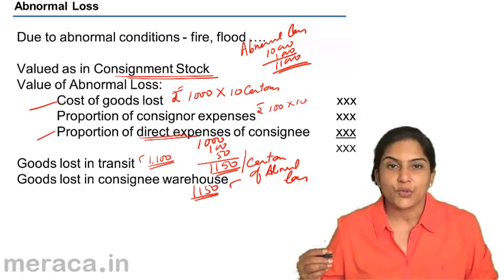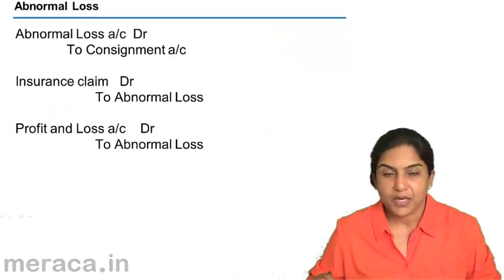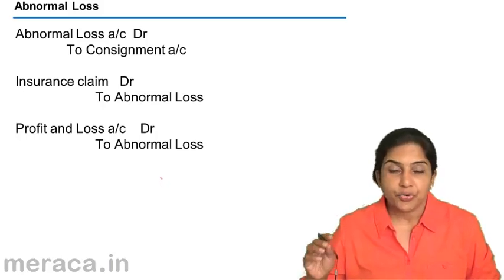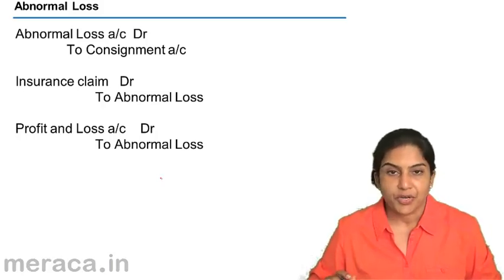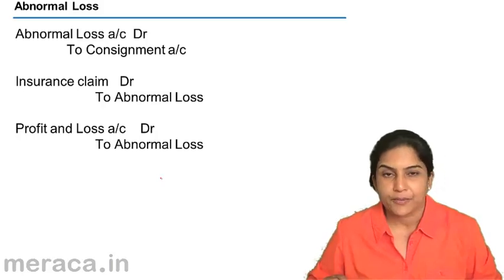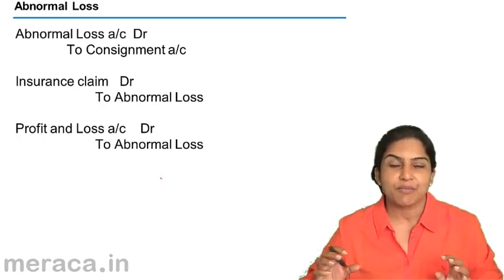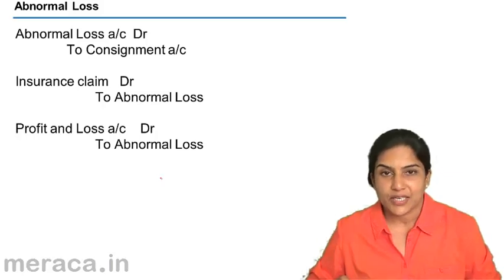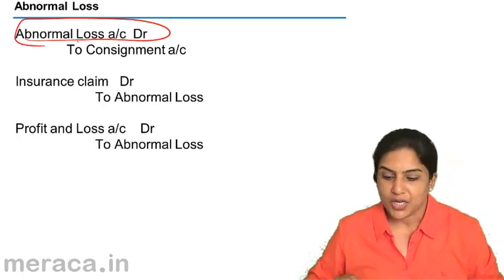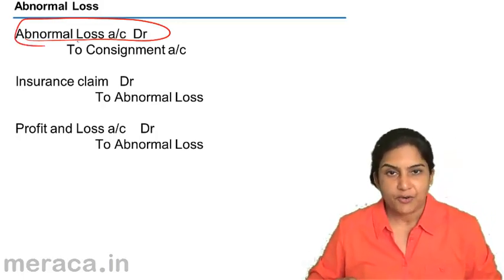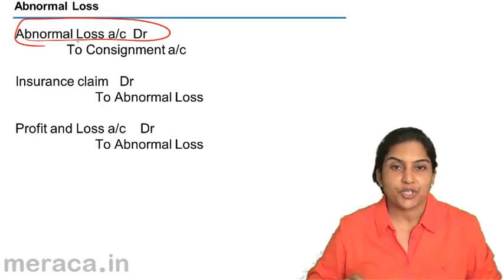Once we value the abnormal loss, what is the accounting treatment? The idea is to remove the effect of abnormal loss from the consignment account. The entry is: Abnormal Loss Account debit, and credit the Consignment Account. Just as for closing stock we debit Consignment Stock Account and credit Trading Account, similarly for abnormal loss we create an Abnormal Loss Account, so the consignment account will show the normal profit.